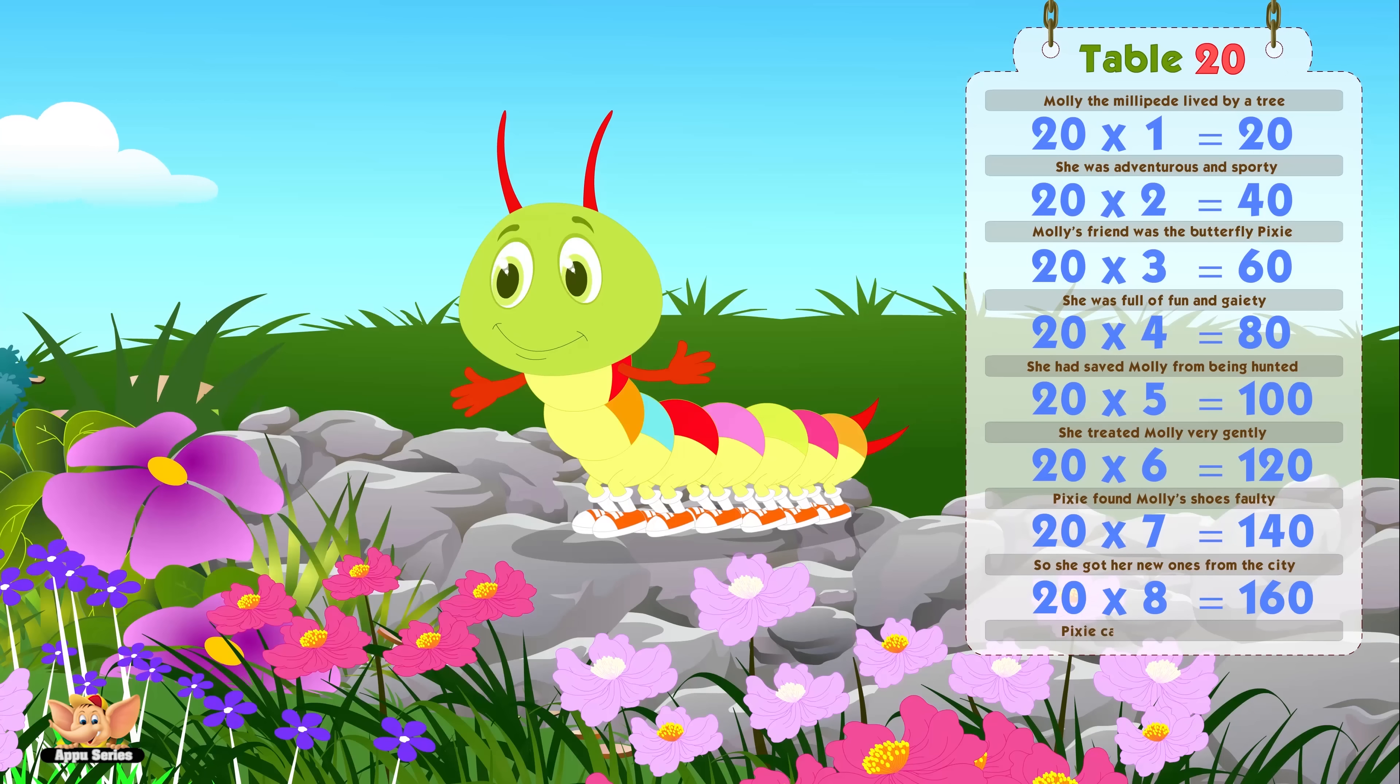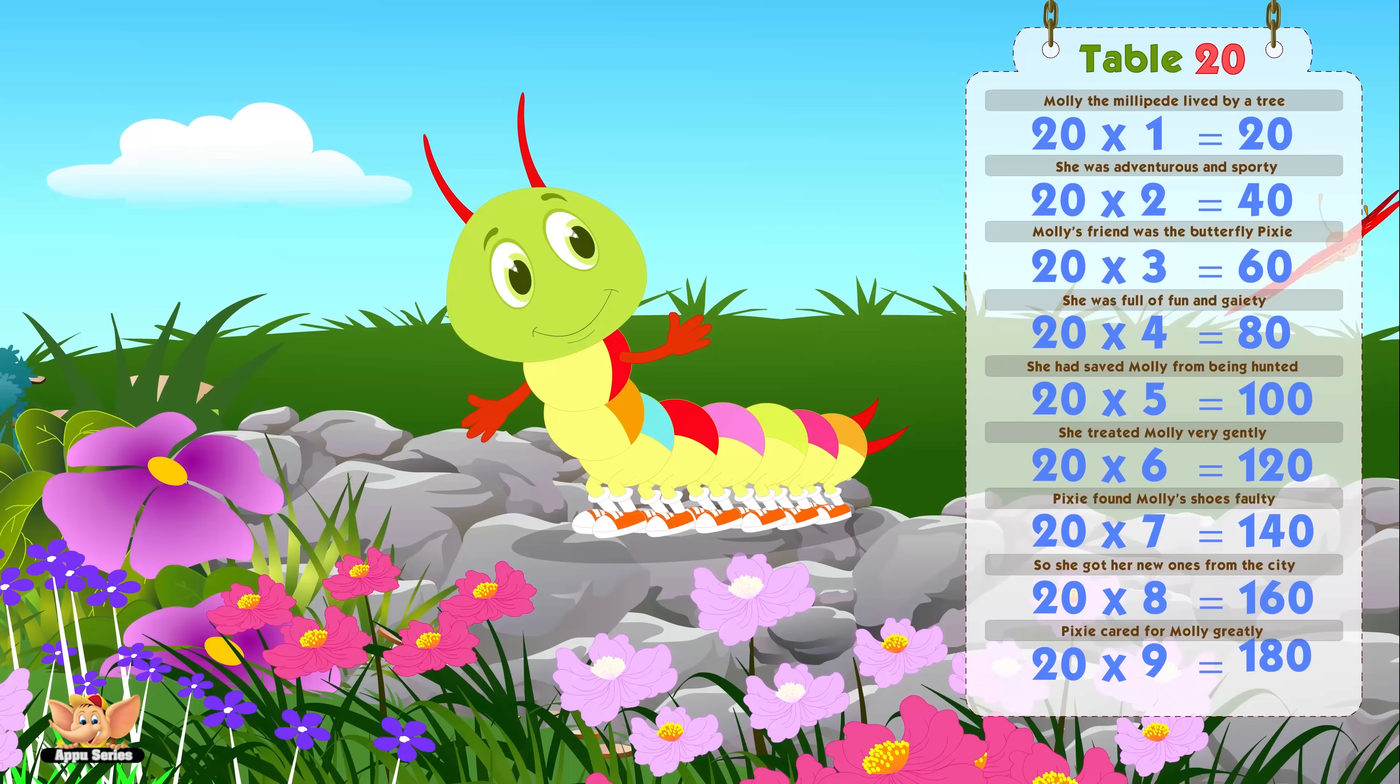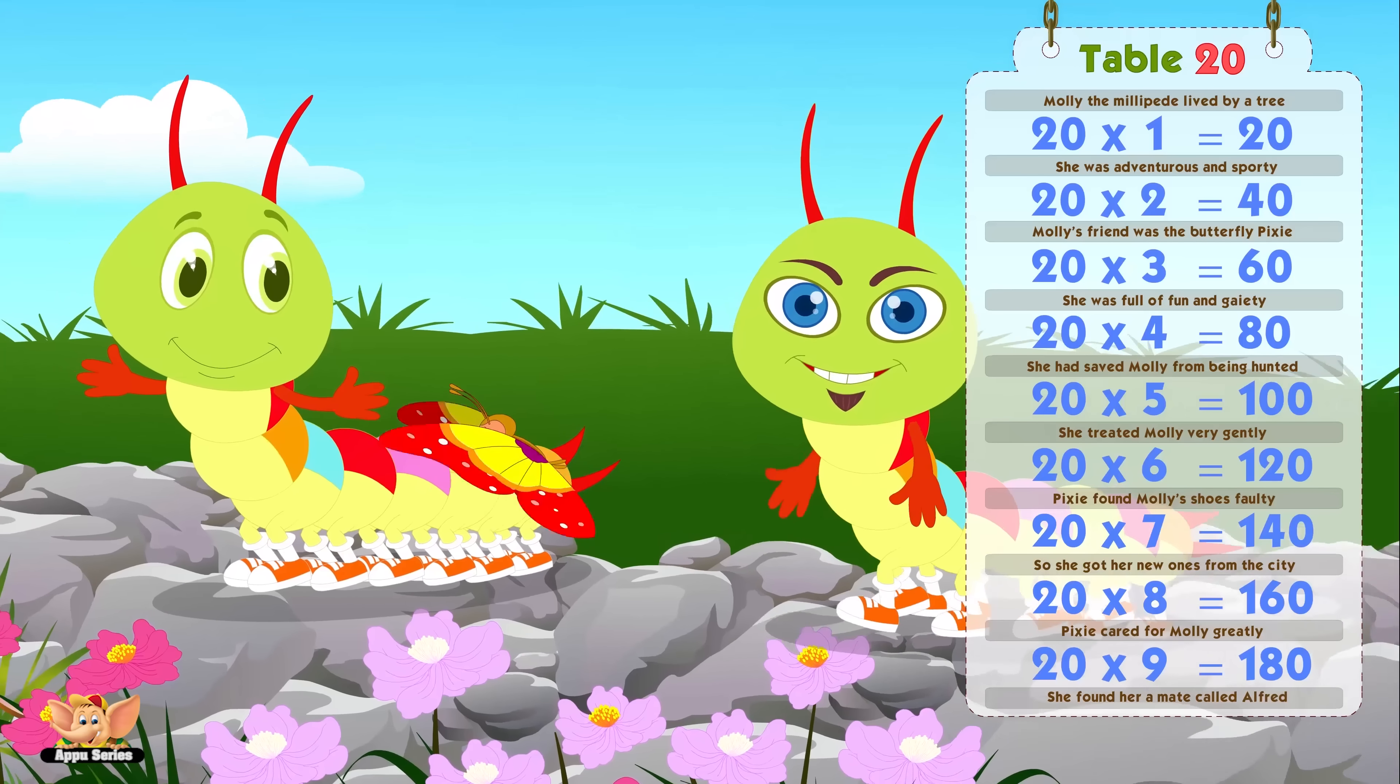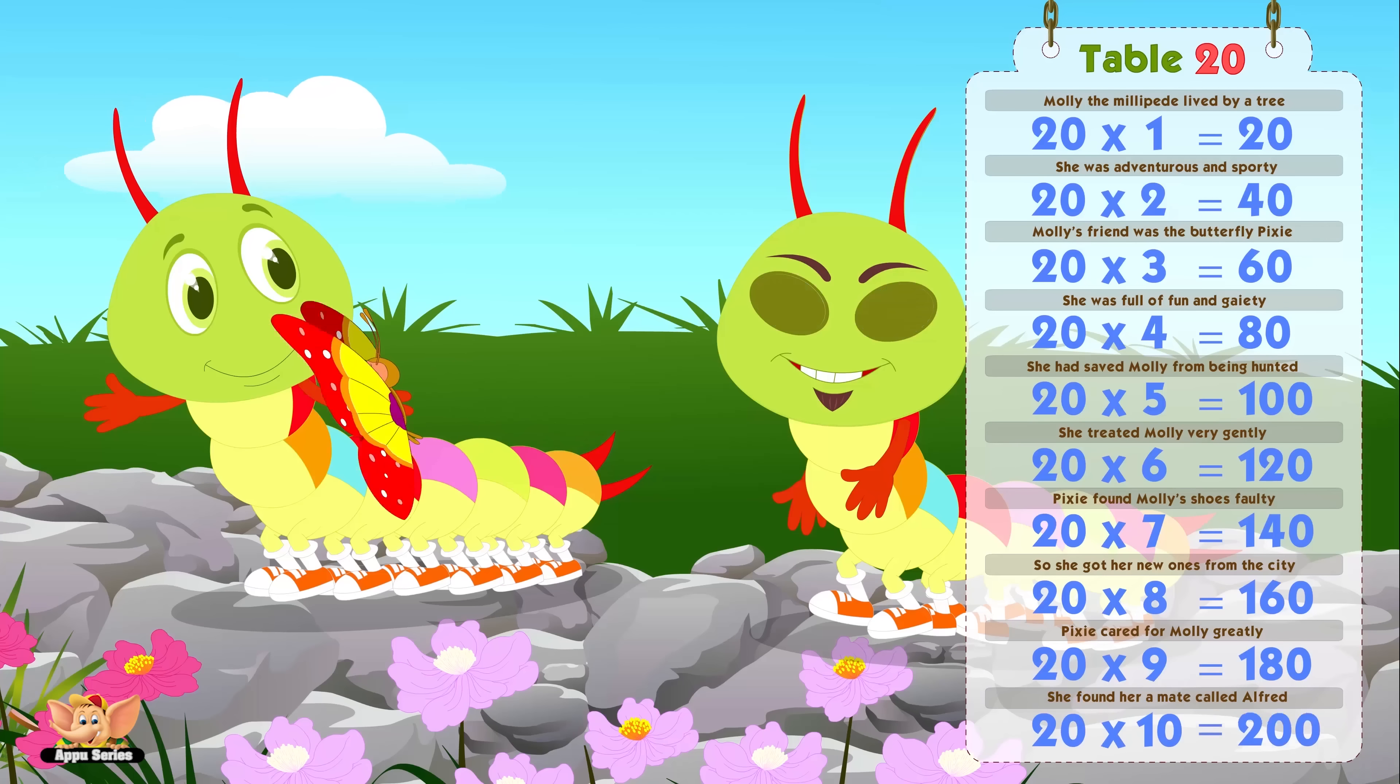Pixie cared for Molly greatly. Twenty nines are one eighty. She found her a maid called Alfred. Twenty tenths are two hundred.